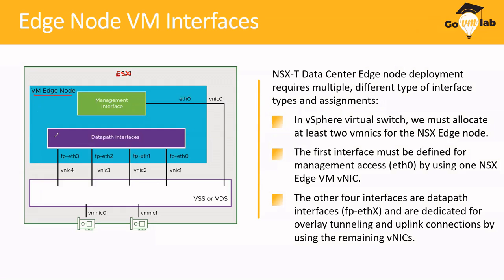When you deploy Edge Node as a VM, because it's a managed entity by VMware, VMware has already given you a pre-configured appliance. This appliance has different types of interfaces. The very first interface we call ETH0, because it's a Linux operating system. Edge Node VM is not running VMware hypervisor — it's a virtual machine running a generic traditional flavor of Linux operating system. So this Edge Node has a first interface called ETH0, which would be your VNIC0.